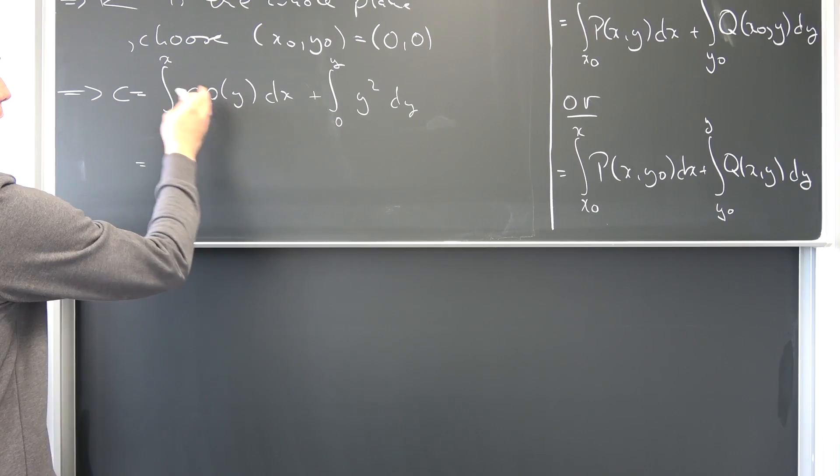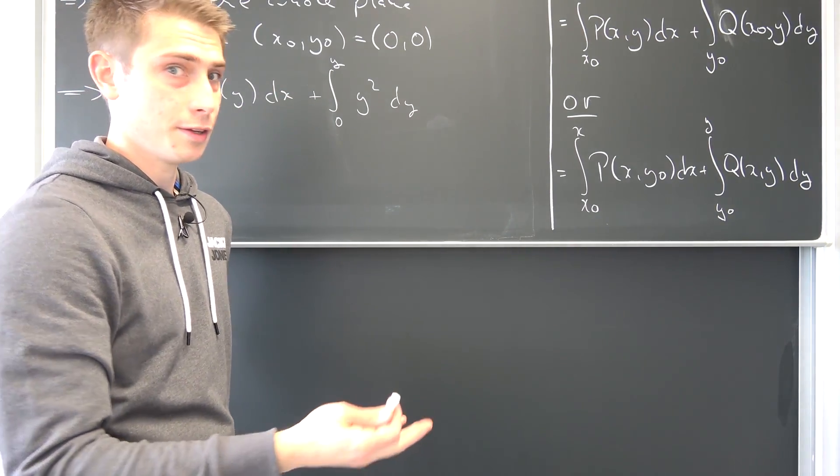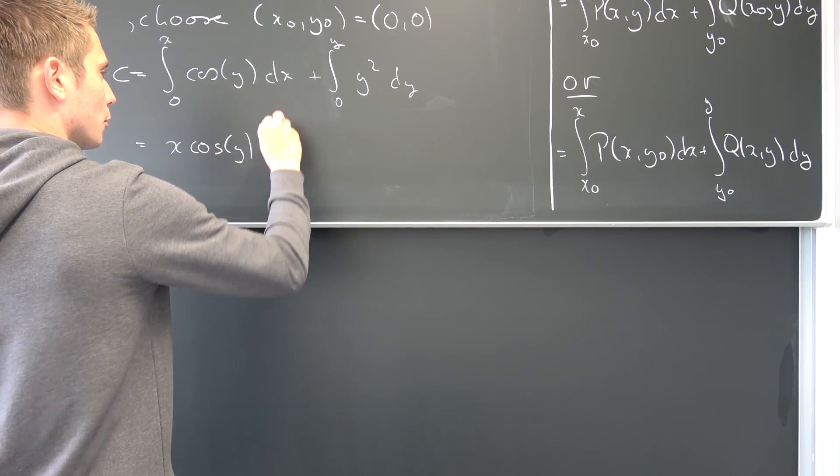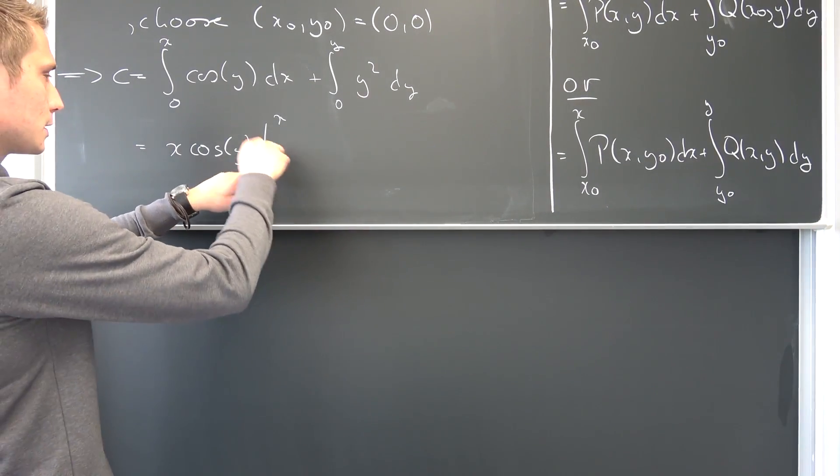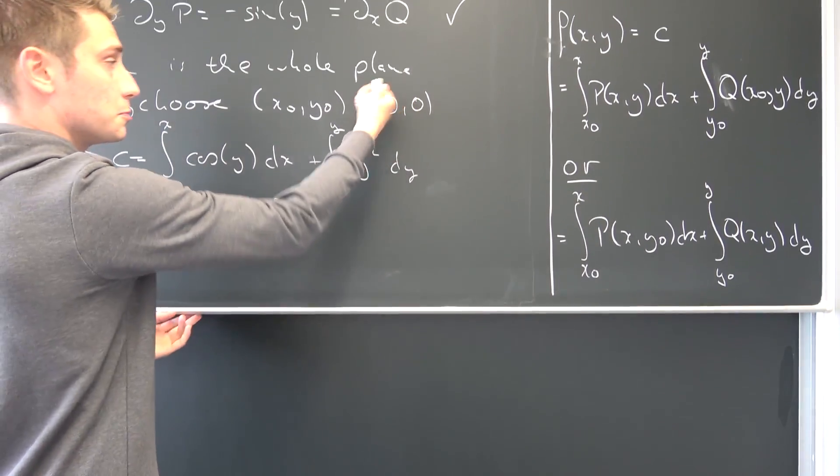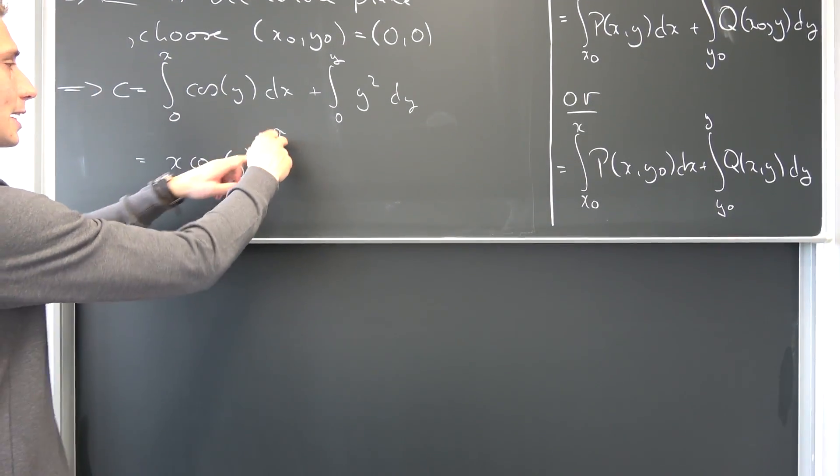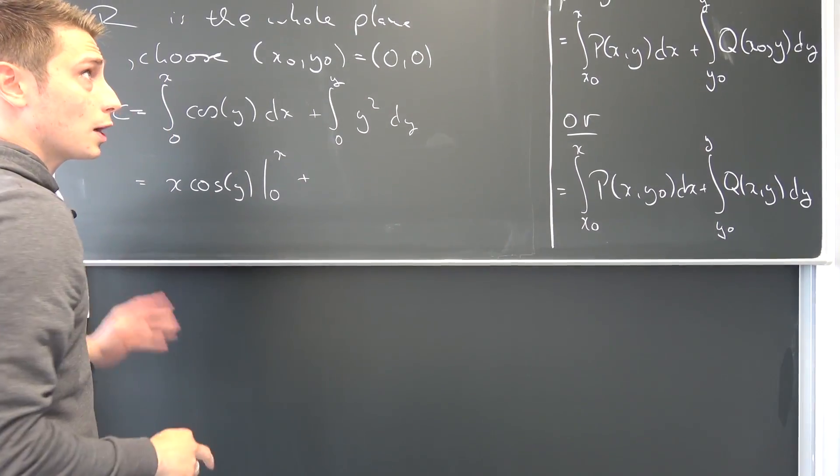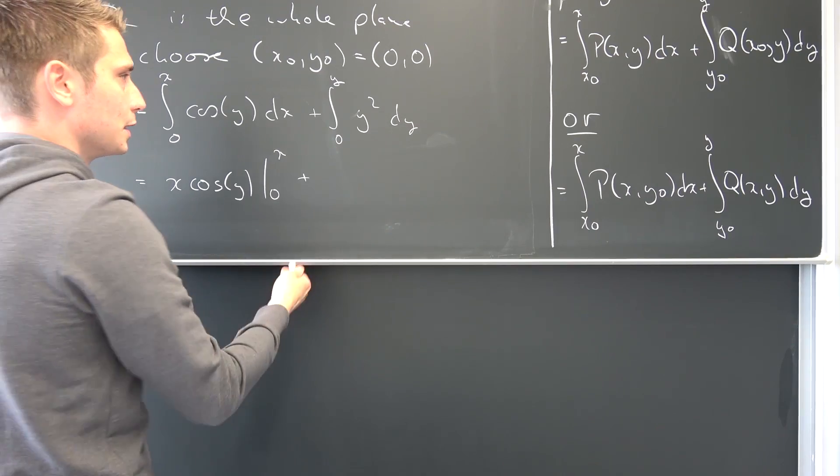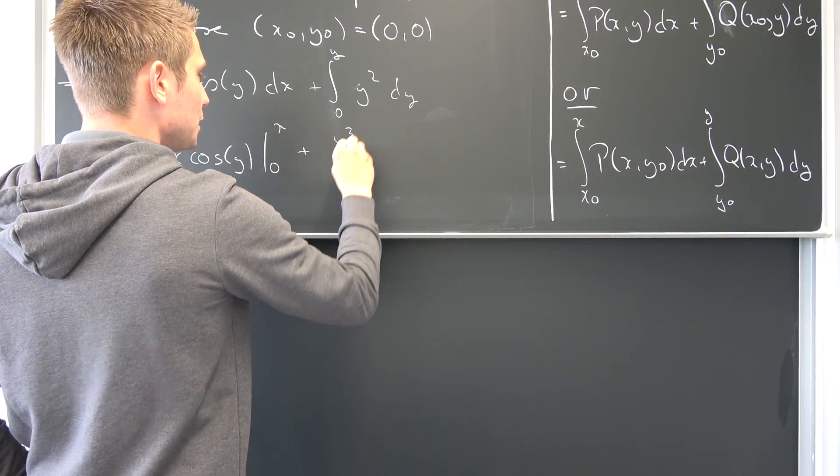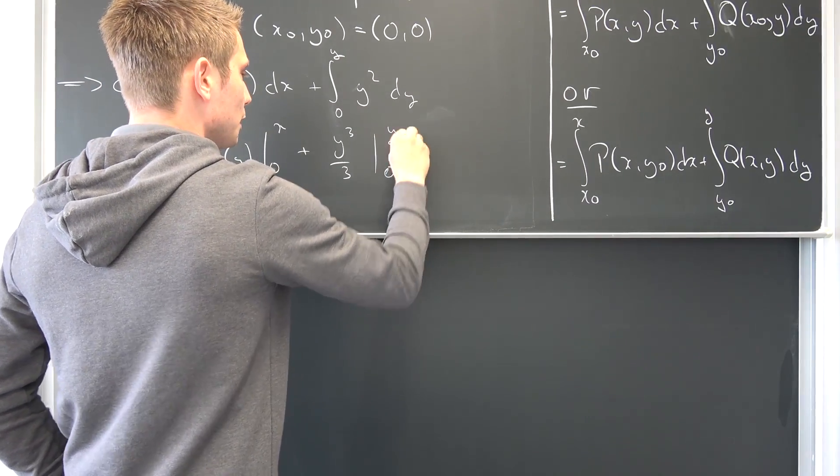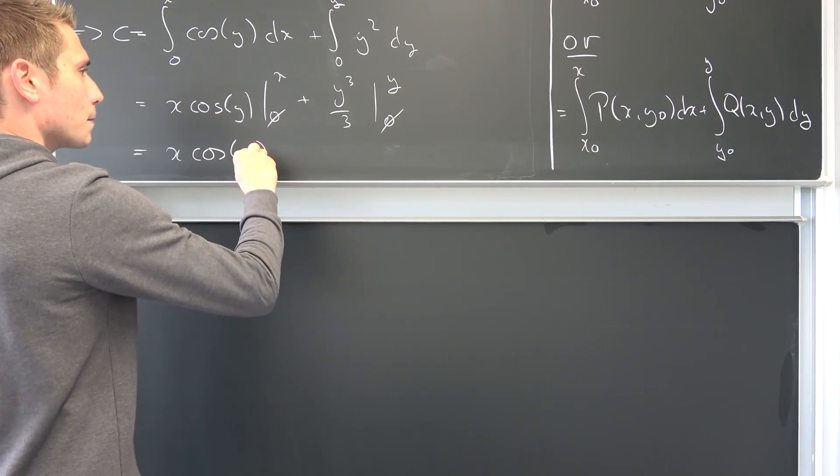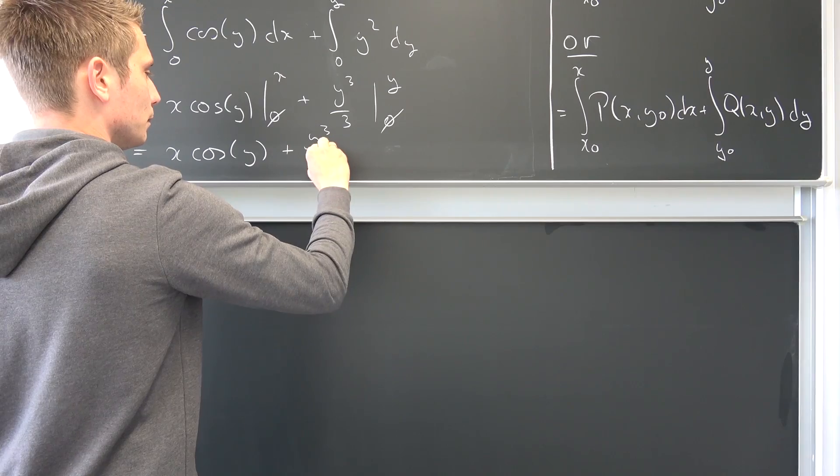This cosine of y is just a constant. We can bring it to the front and integrating just one is going to result in X. So we are going to have X times the cosine of y from 0 to X. Just like before this is going to vanish if we have 0 here. That's why we choose this pair nice and easy lemon squeezy. Plus this is going to give us y^3/3 if we integrate this polynomial in y with respect to y. This is going to give us y^3/3 from 0 to y. Once again going to vanish and all that's really left is X times the cosine of y plus y^3/3.